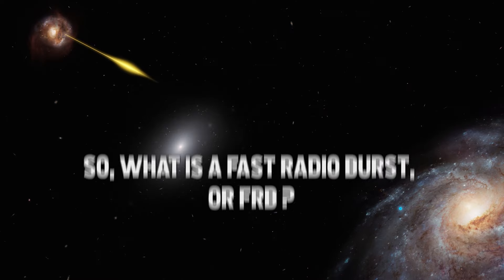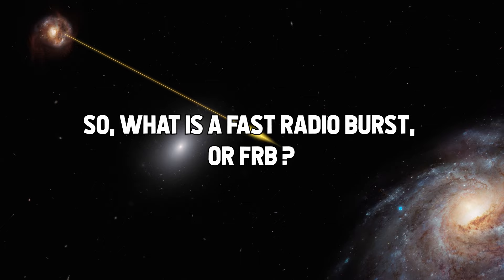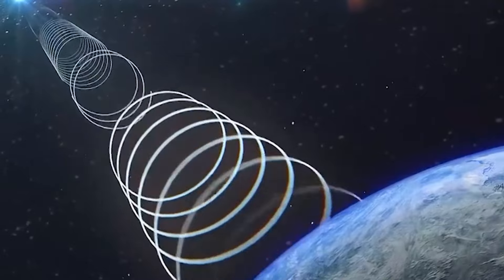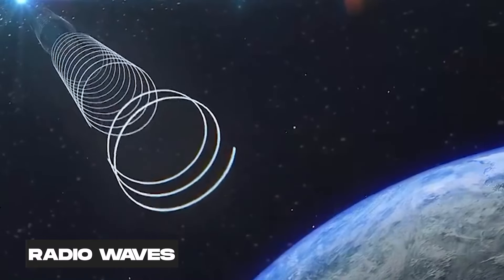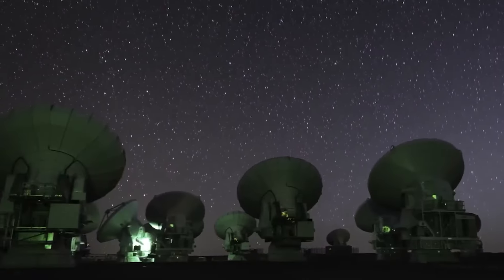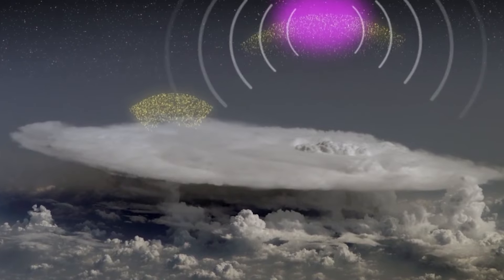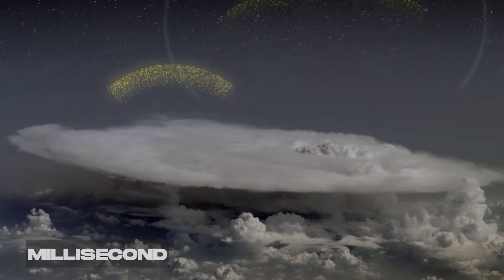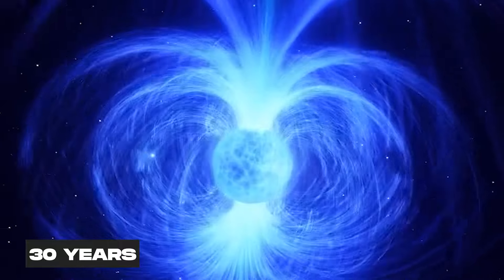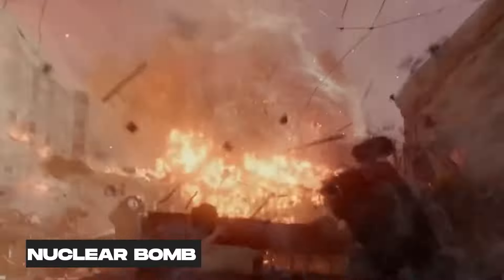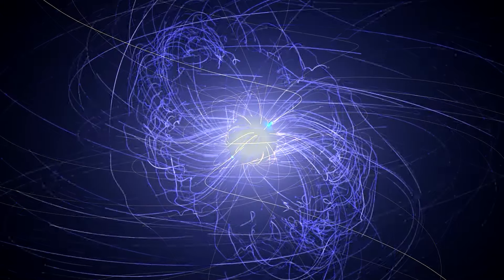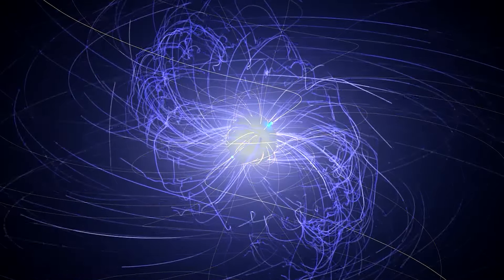Alright, let's get started. So what is a fast radio burst, or FRB for short? Well it's exactly what it sounds like, a very short and very intense burst of radio waves that comes from somewhere in the sky. These things are so powerful they can release more energy in a millisecond than our sun does in 30 years. That's like a billion times more powerful than a nuclear bomb. And they're so mysterious we don't even know what causes them.